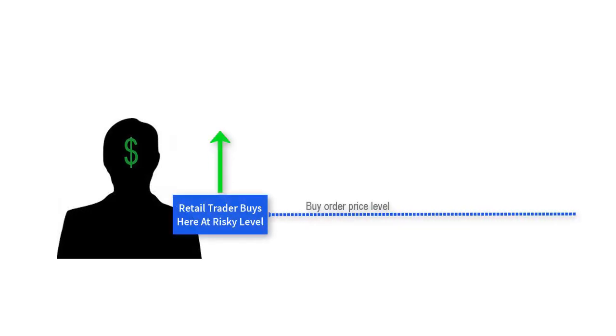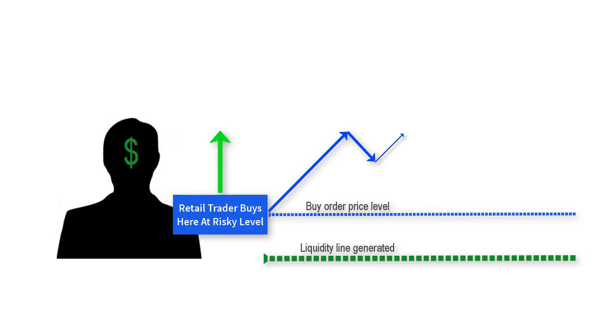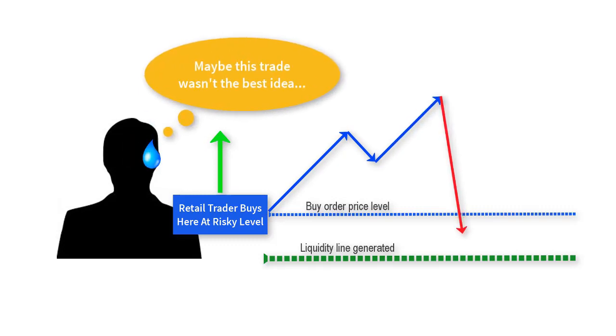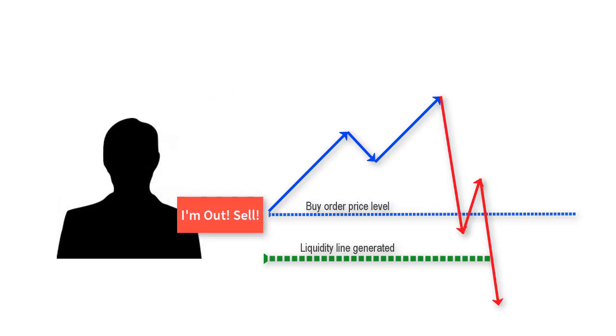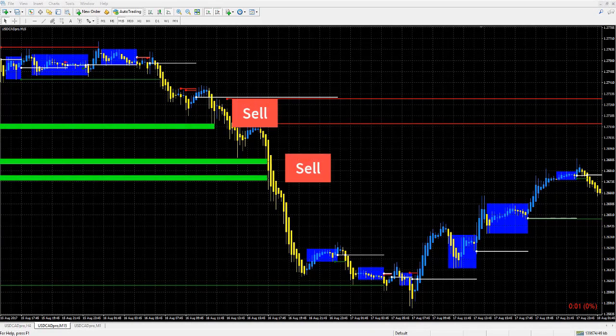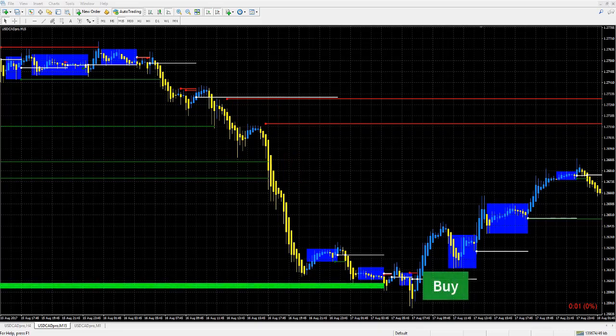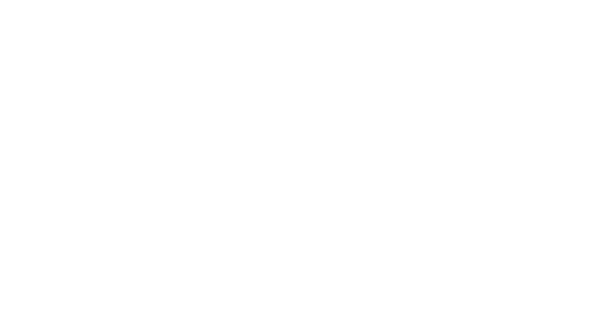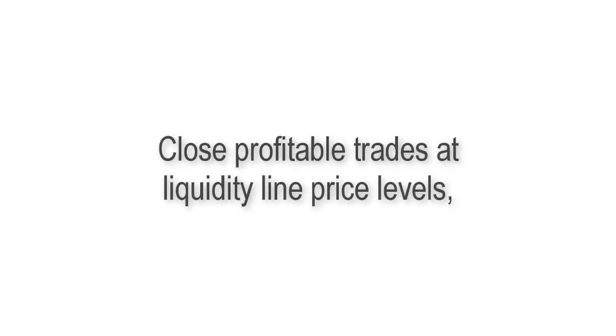When a liquidity line is generated, retail traders have most likely opened new trades that the ATS algorithm identifies as potentially risky. The liquidity line is drawn at the price level where, if price returns, traders who haven't closed their positions will start to feel uncomfortable. If a green liquidity line is hit, those traders are now pressured into closing, causing them to sell. The big investment firms can either allow this flood of sell liquidity to drive down the market or accumulate it to close existing positions or enter new ones. That is why it's a good strategy to close your profitable trades at these levels, or at least cautiously monitor your positions in case of a market reversal.